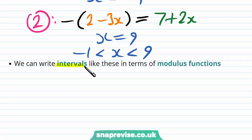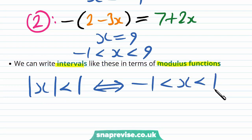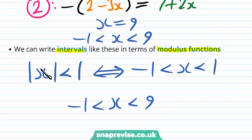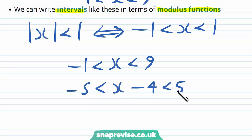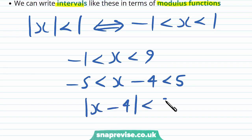We can write intervals like these in terms of modulus functions. In the simplest case, the modulus of x being less than 1 is equivalent to saying that x is strictly between minus 1 and 1. So if we're given the inequality minus 1 less than x less than 9 as we had above, we can subtract 4 from both sides to get that minus 5 is less than x minus 4 which is less than 5. By symmetry, we can see that this implies that the modulus of x minus 4 is less than 5.